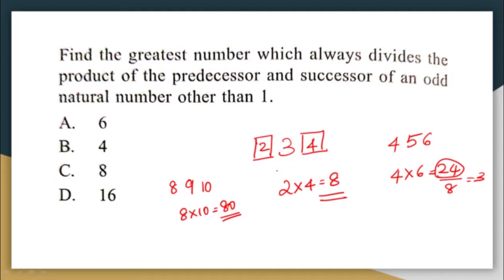So the greatest number which will always divide the product of the successor and the predecessor of an odd number other than one is always eight. The correct answer here will be option C, that is eight.